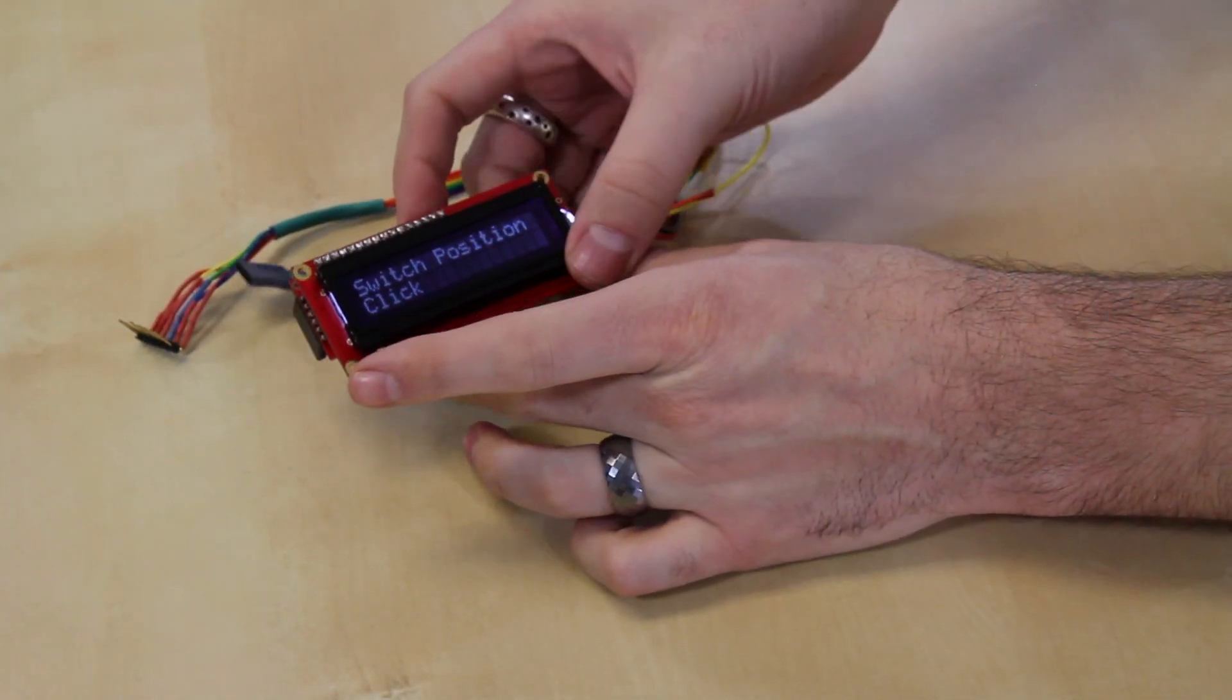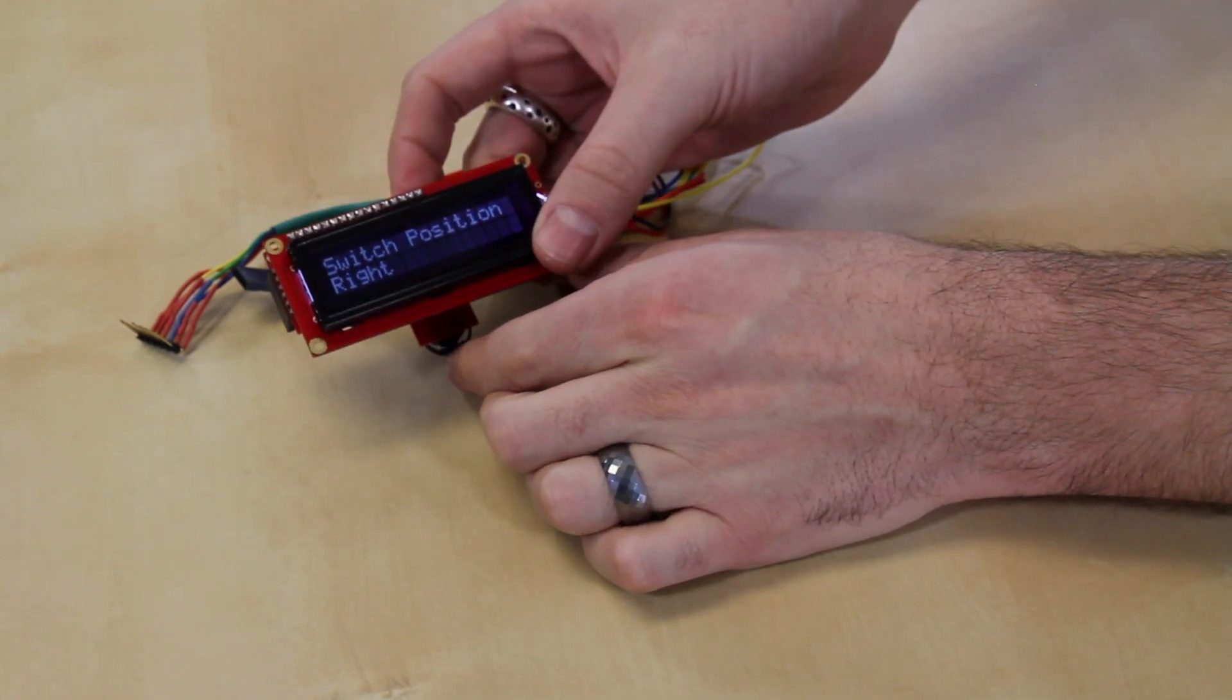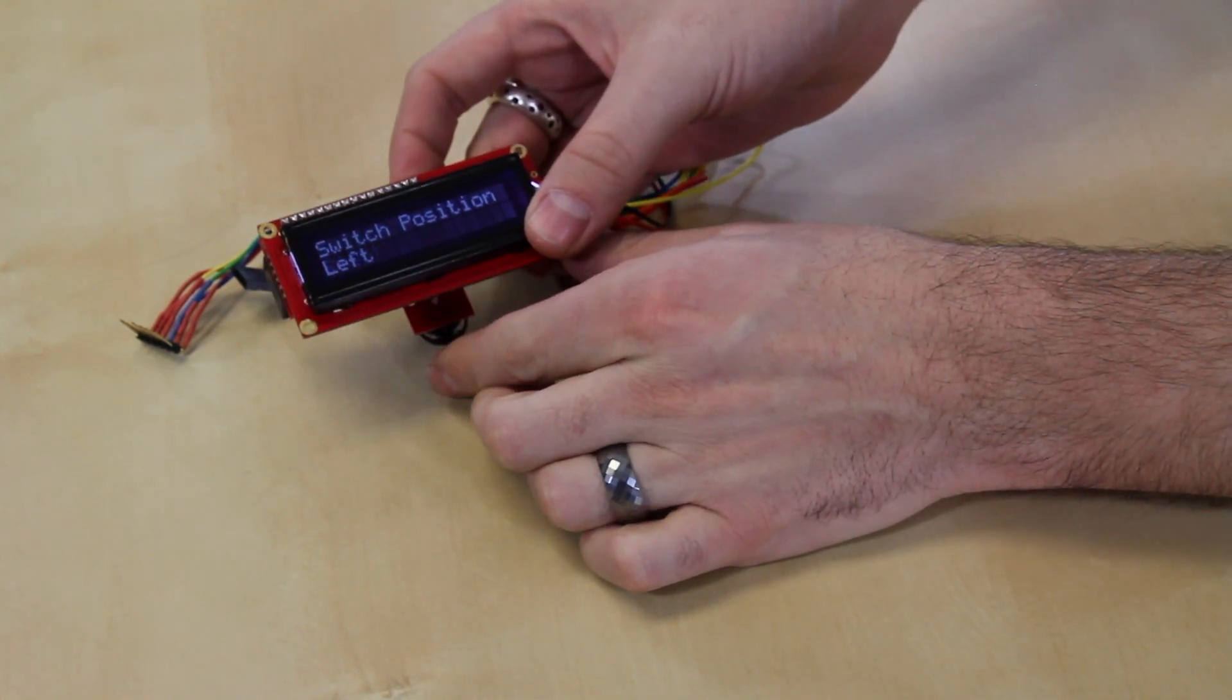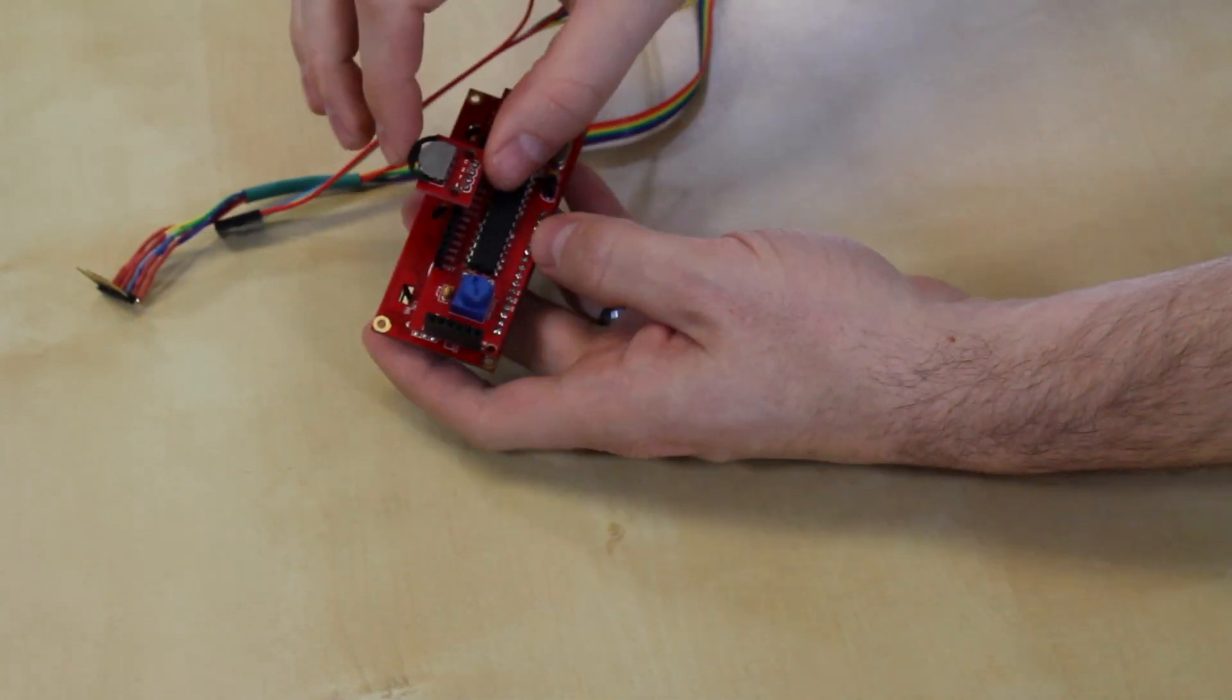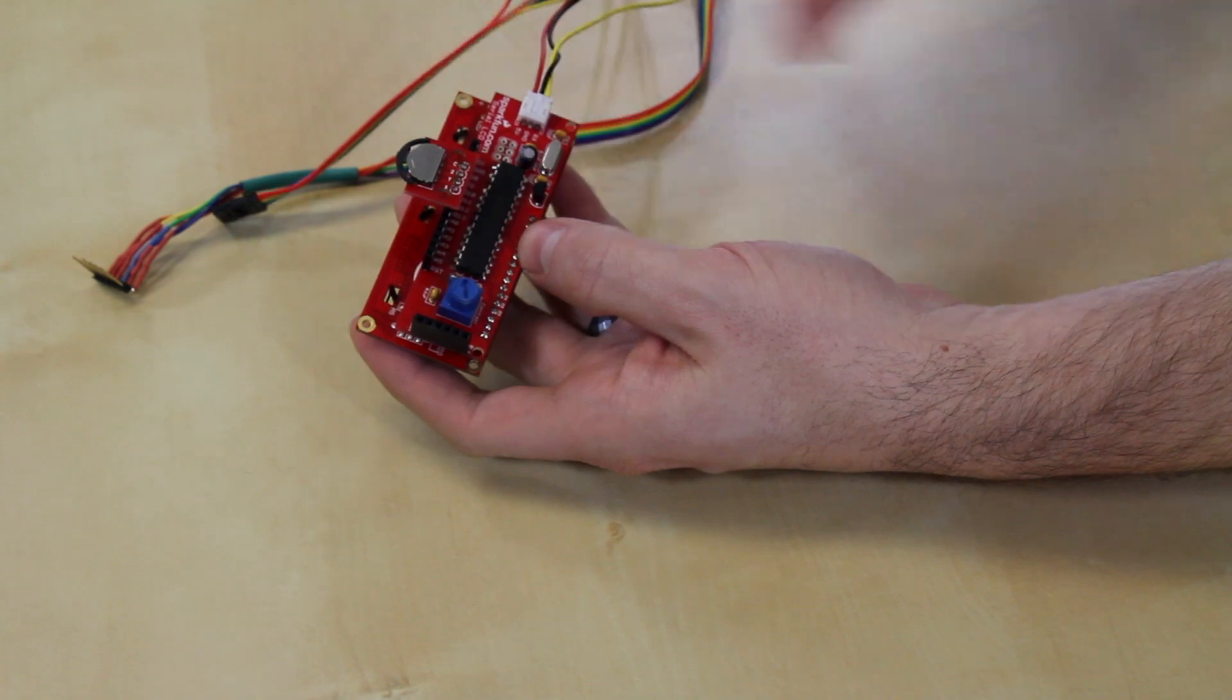Now, we just have our little switch here at the bottom, and you can see that when we go right, it says right. Left, it says left. And when we click it, it's click. So this is just a really simple example of how you can use some input control into your serial LCD kit.